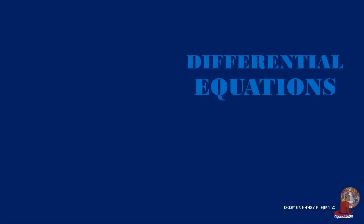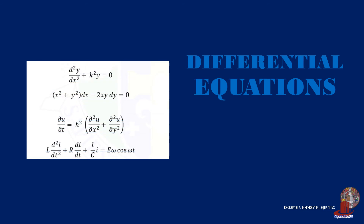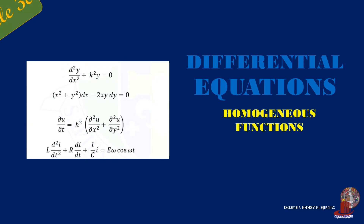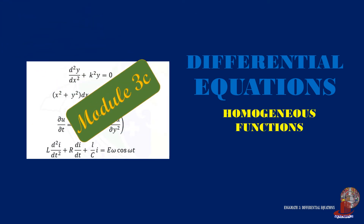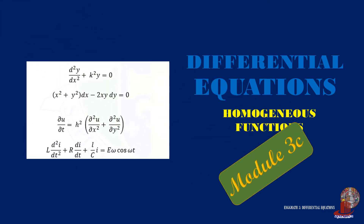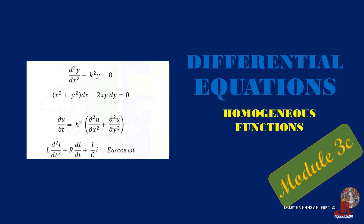Homogeneous functions are those equations which have a homogeneous degree of terms. There are instances that they can be distinguished easily, but when uncertain, methods are available to check homogeneity. Learn about this here in Engineering Math 5.